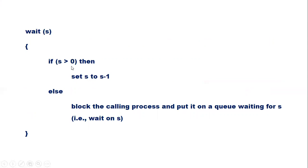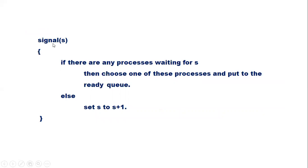This is the modified definition of the wait operation. If S is greater than 0, meaning the resource is available, then set S equal to S minus 1, indicating that the resource is allocated to the process and is not currently available. Else, the resource is not available, so block the calling process and put it in a queue waiting for semaphore S. This is the modified definition of the signal operation: if there are any processes waiting for S, choose one of them and move it from the waiting queue; else set S equal to S plus 1, indicating that the resource is now available.